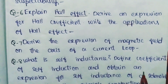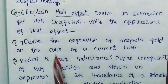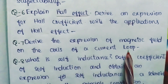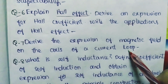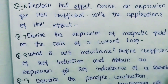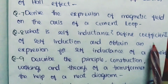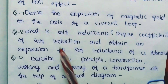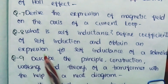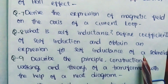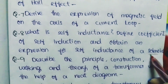Question Number 7: Derive the expression for magnetic field on the axis of a current loop. This one sometimes comes as a short question too. Question Number 8: What is self inductance? Define coefficient of self induction and obtain an expression for self induction of a solenoid. Definitely one question related to solenoid will be there.